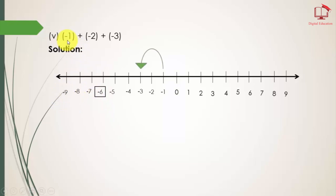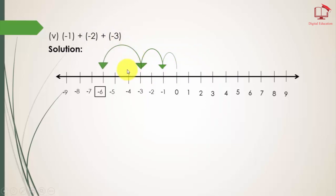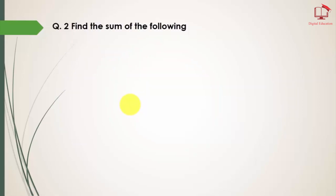The first integer is minus 1. The second integer is minus 2 — the second arrow starts from where the first arrow ends. The third integer is minus 3, starting from the end of the second arrow. So we have minus 1, minus 2, and minus 3. We get the answer minus 6. This completes question number 1.